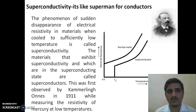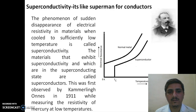Hello friends. Today we are going to discuss about superconductivity. It is one of the most important effects of modern physics. Superconductivity is like superman for conductors. The phenomenon of sudden disappearance of electrical resistivity in materials when cooled to sufficiently low temperatures is called superconductivity. The materials that exhibit superconductivity and which are in the superconducting state are called superconductors.